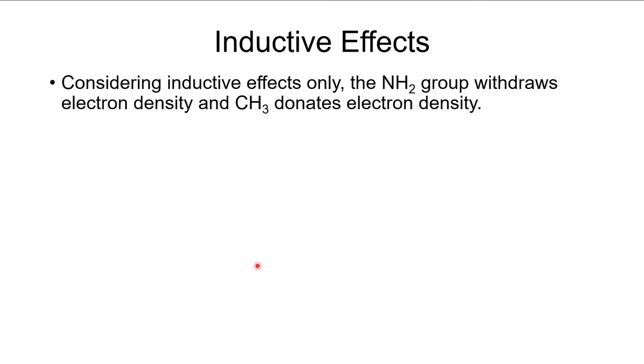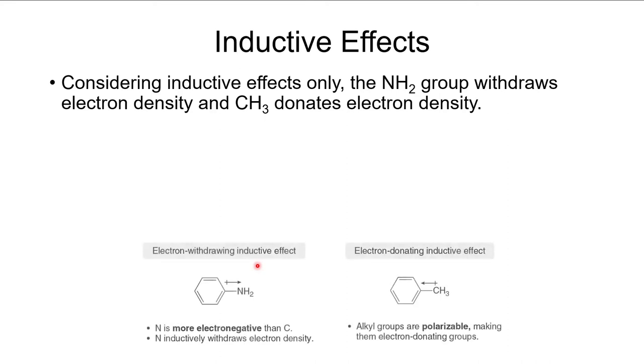There are two different electron donating and withdrawing effects: the inductive effect and the resonance effect. The inductive effect is determined by differences in electronegativity. Electronegative atoms like nitrogen, oxygen, or halogens are electron withdrawing inductively — for example, a carbon-nitrogen bond is polar and through that sigma bond electrons are withdrawn from the carbon, making it an inductive electron-withdrawing group.